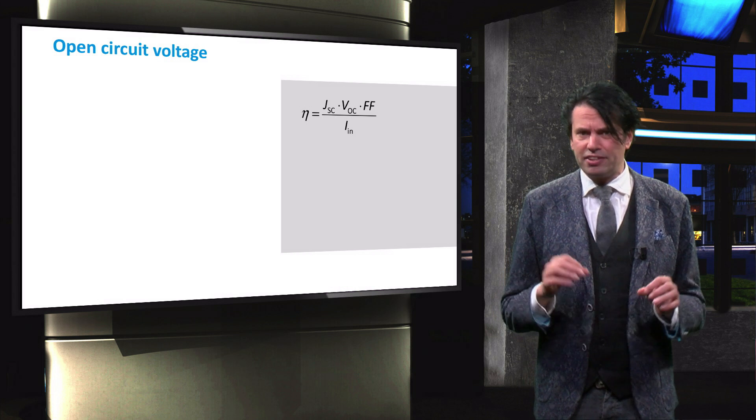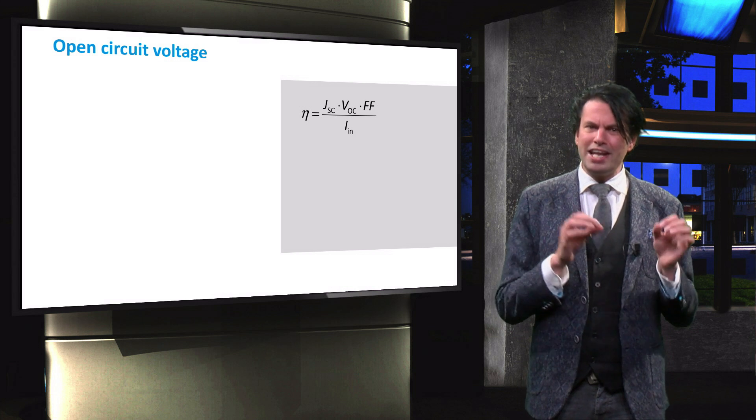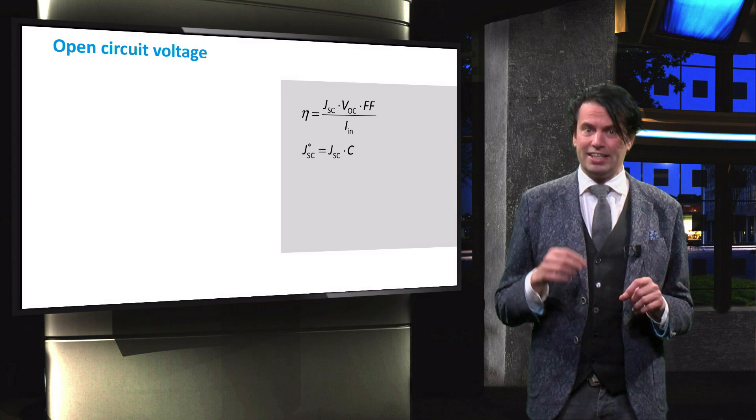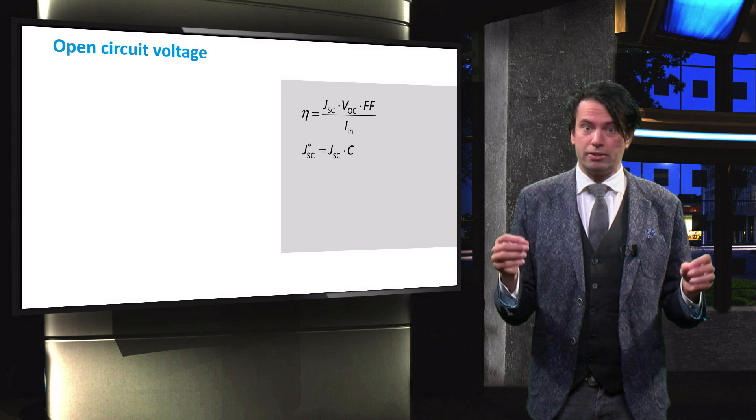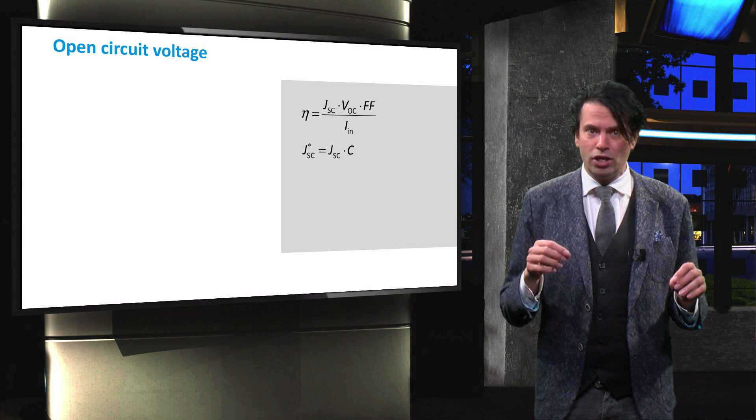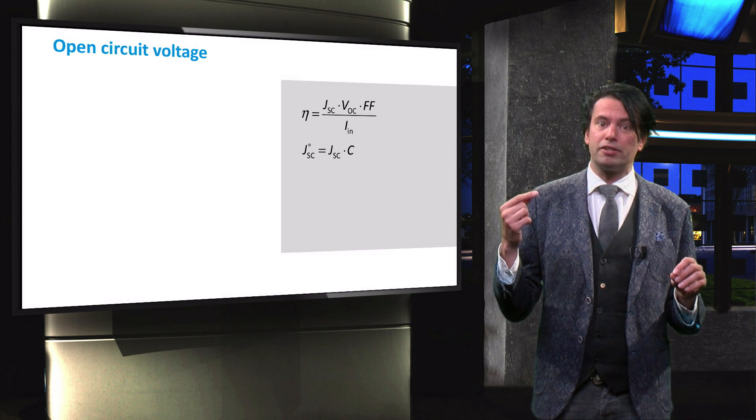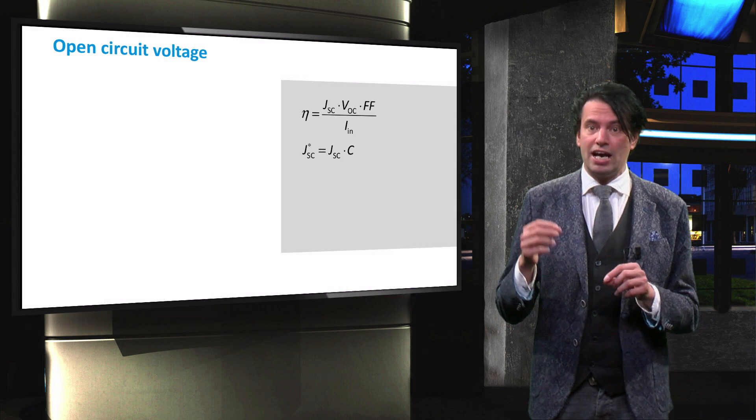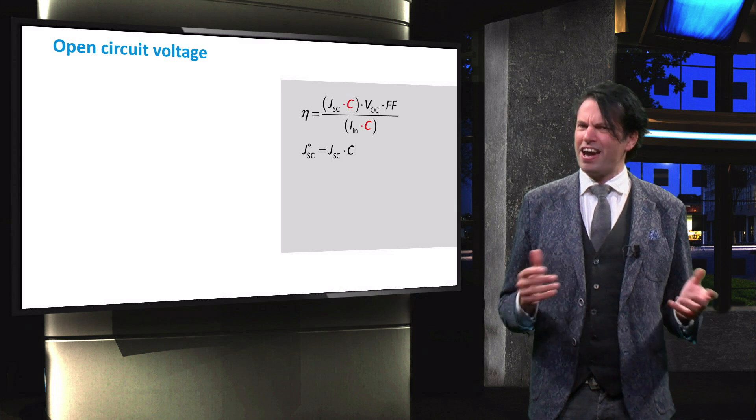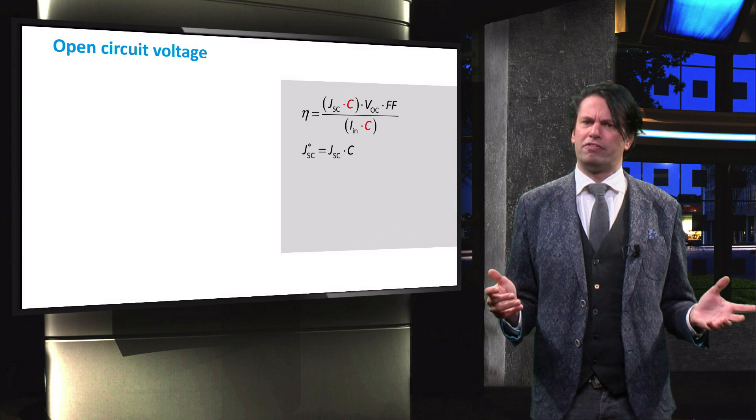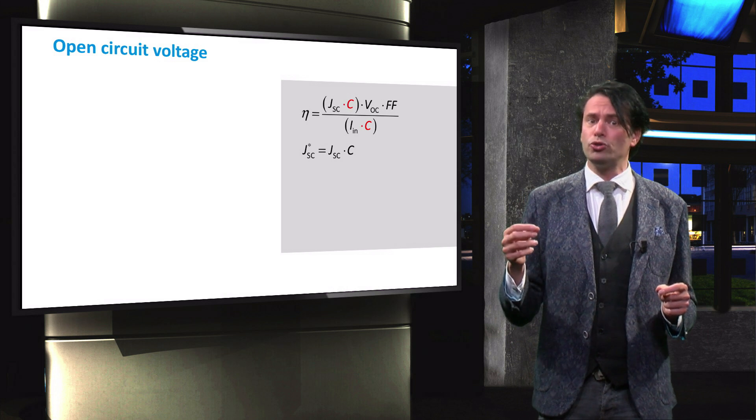The JSC is directly related to the light concentration C, as indicated by this relation. If the solar cell is illuminated by 2 suns instead of 1, twice the amount of charge carriers is generated in the device and the JSC will double. This doesn't affect the efficiency of the solar cell however, since the irradiance has also doubled.